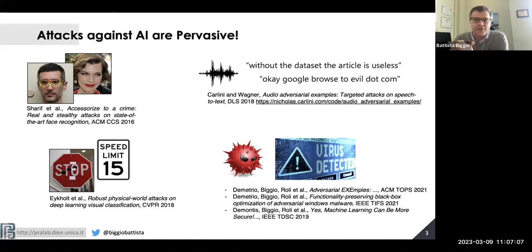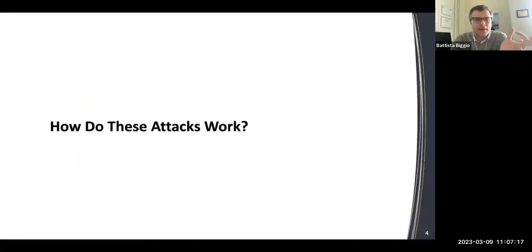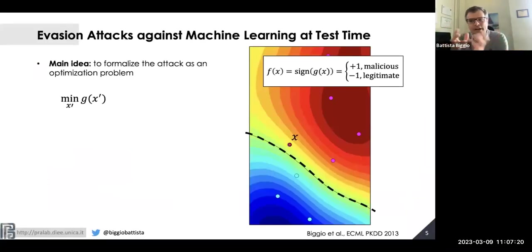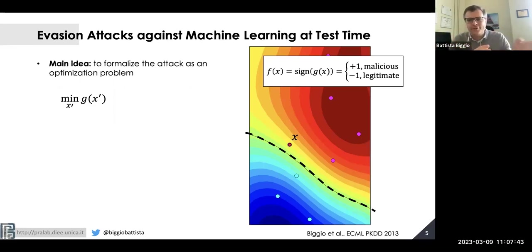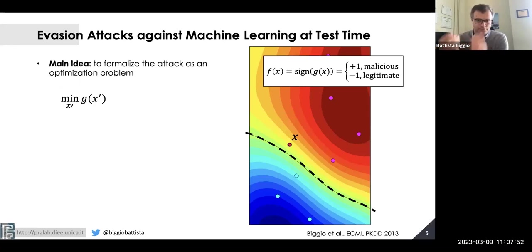The existence of adversarial examples has been shown in countless applications, not only on images. The main intuition is that the noise you craft is a function of the model you are attacking. Looking back to 2012–2013, our group was working on bypassing malware detectors based on standard machine learning techniques — neural nets and support vector machines. The idea was to formalize the problem of bypassing the model as an optimization problem.